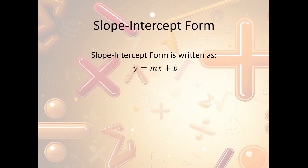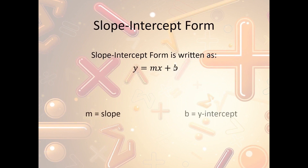Slope-intercept form is written as y equals mx plus b. What does that mean? M is the slope, and b is the y-intercept. Y and x are variables that stay as variables so that I can plug numbers in and see what they come out to be. So m is the slope and b is the y-intercept.